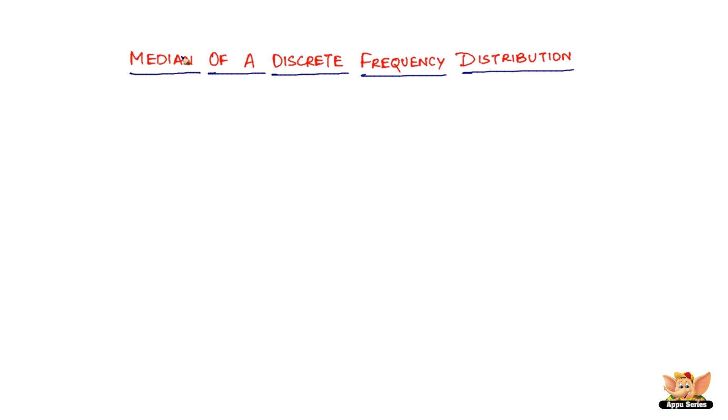In this video, we will look into the median of a discrete frequency distribution. For example, we've got this frequency distribution with the variates 1, 2, 3, 4, 5, 6, 7, 8, 9, and the frequencies are 9, 6, 4, 10, 12, 7, 8, 13, and 14. Now, how do you find the median of this discrete frequency distribution?